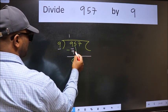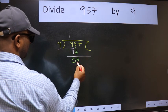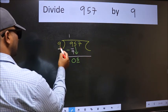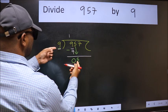After this, bring down the beside number. So 5 down. Now here we have 5 and here 9. 5 is smaller than 9.